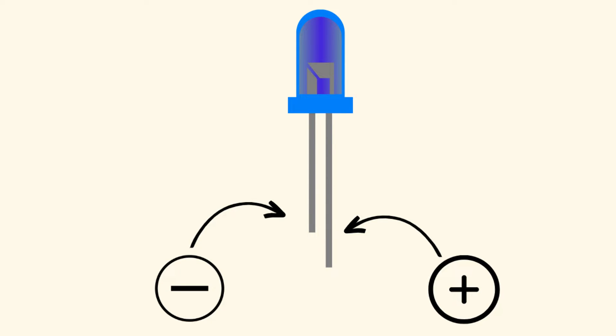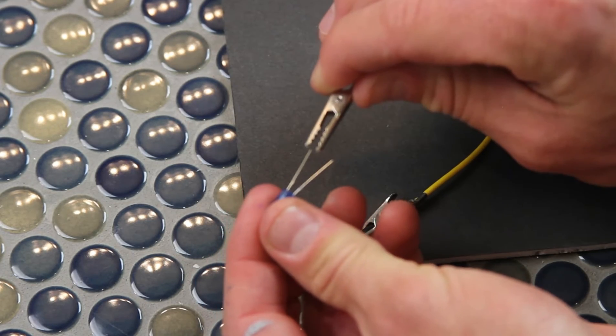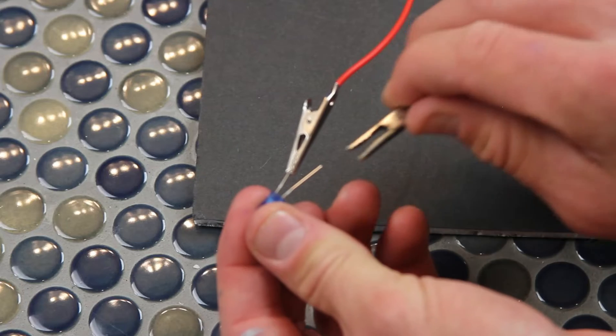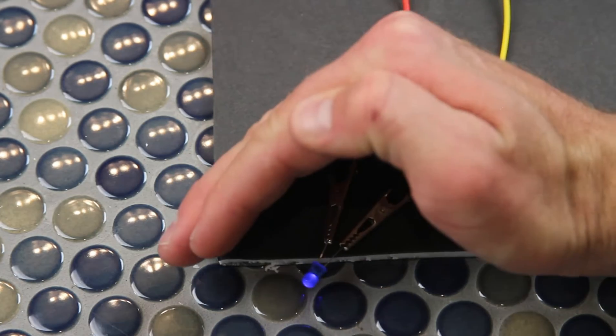The shorter end coming out of the light is the negative diode, and the longer one is the positive diode. So go ahead and connect those like so. The negative side to the negative side, and the positive side to the positive side.